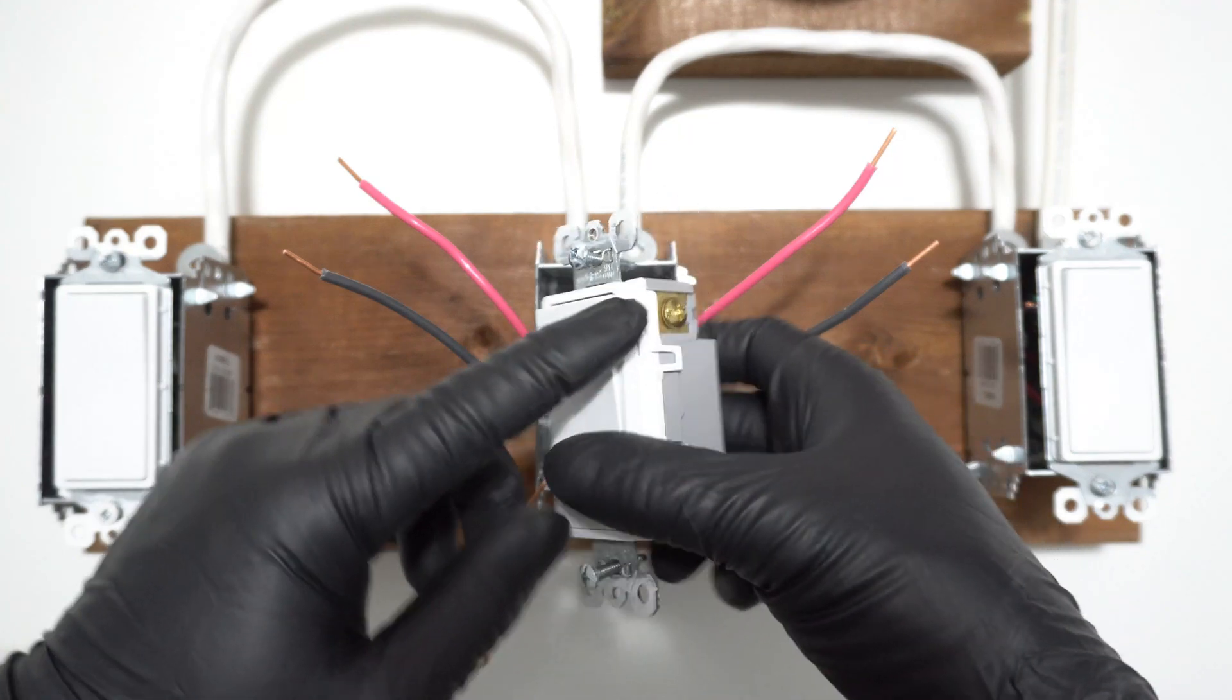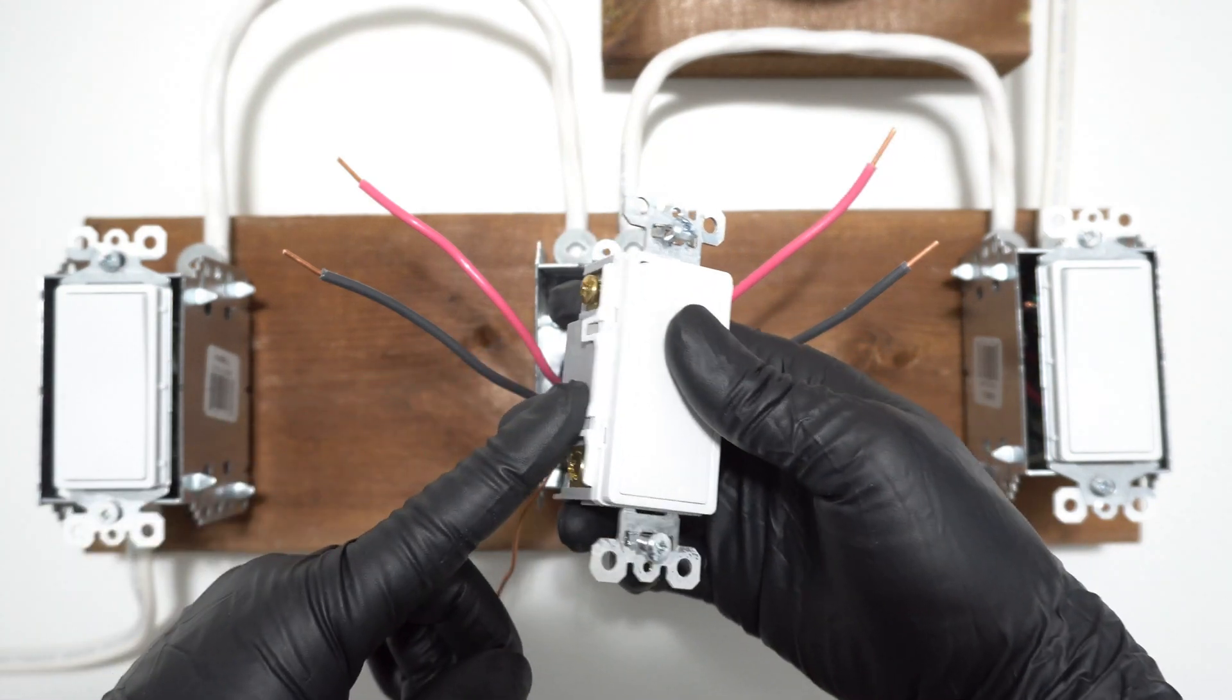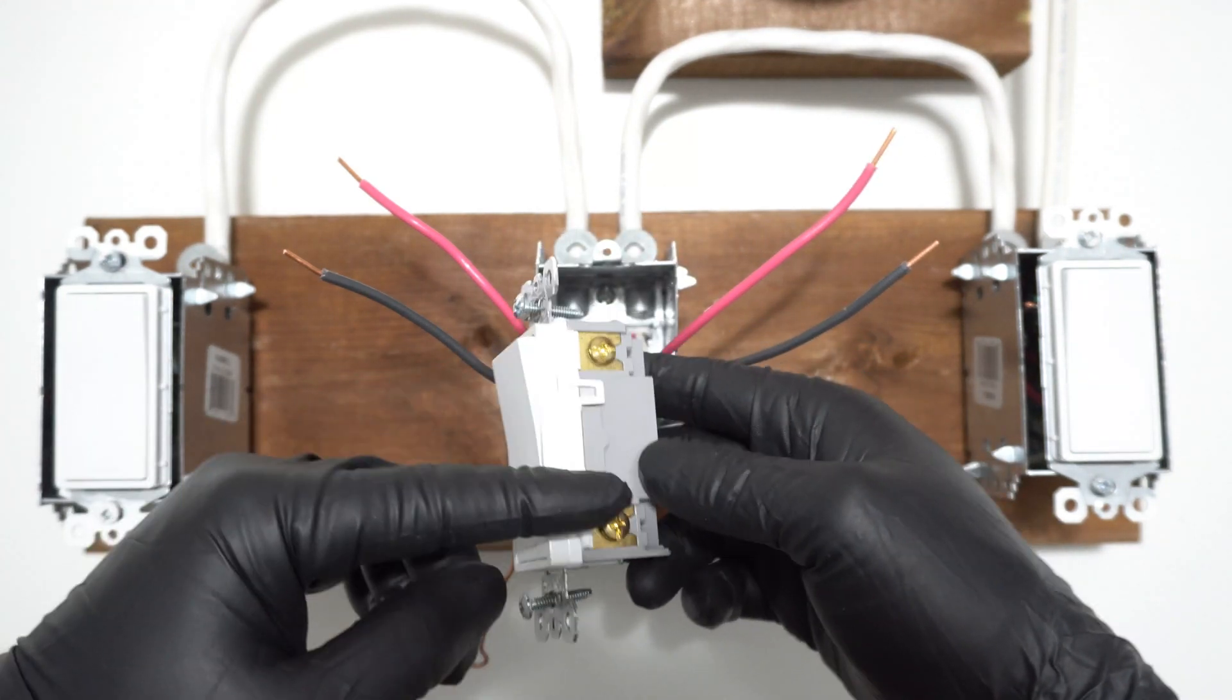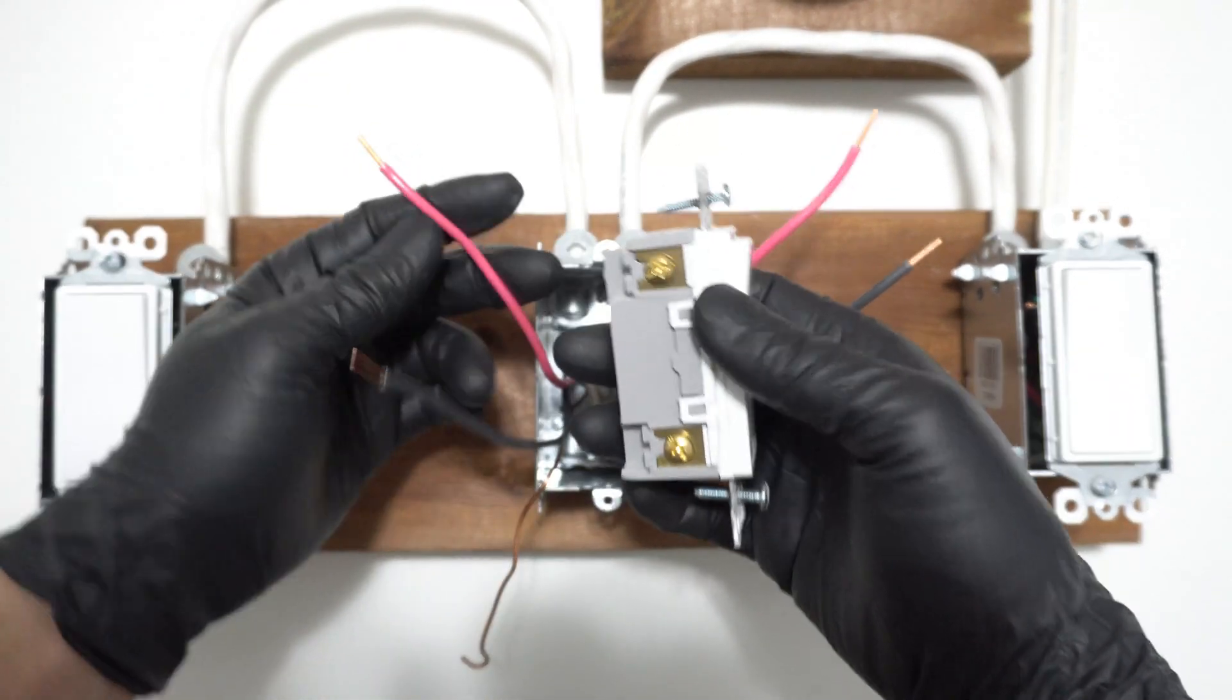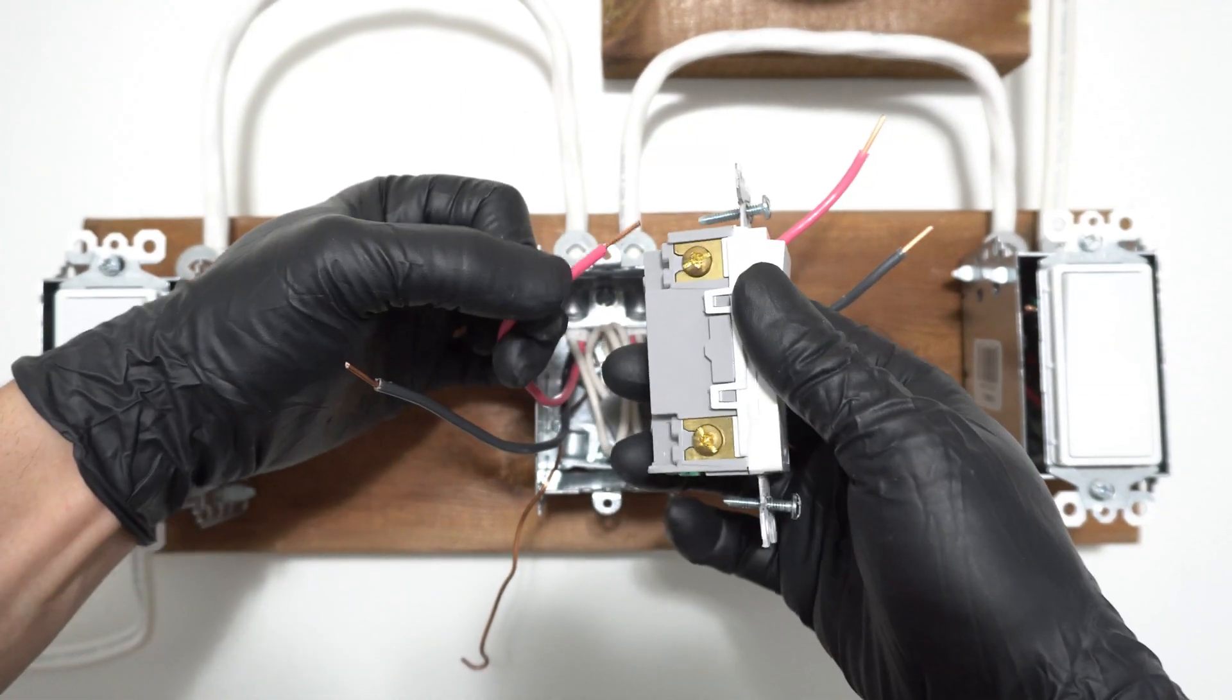If you put blacks on this side, this side has to be red. If you put red on this side, this side has to be both blacks. We can put reds on this side.